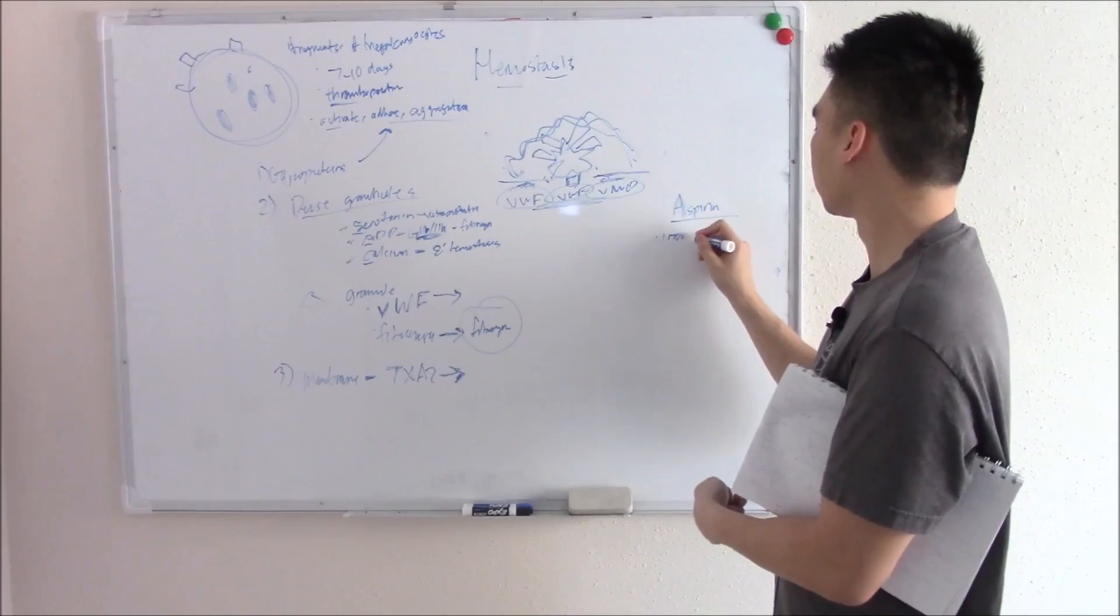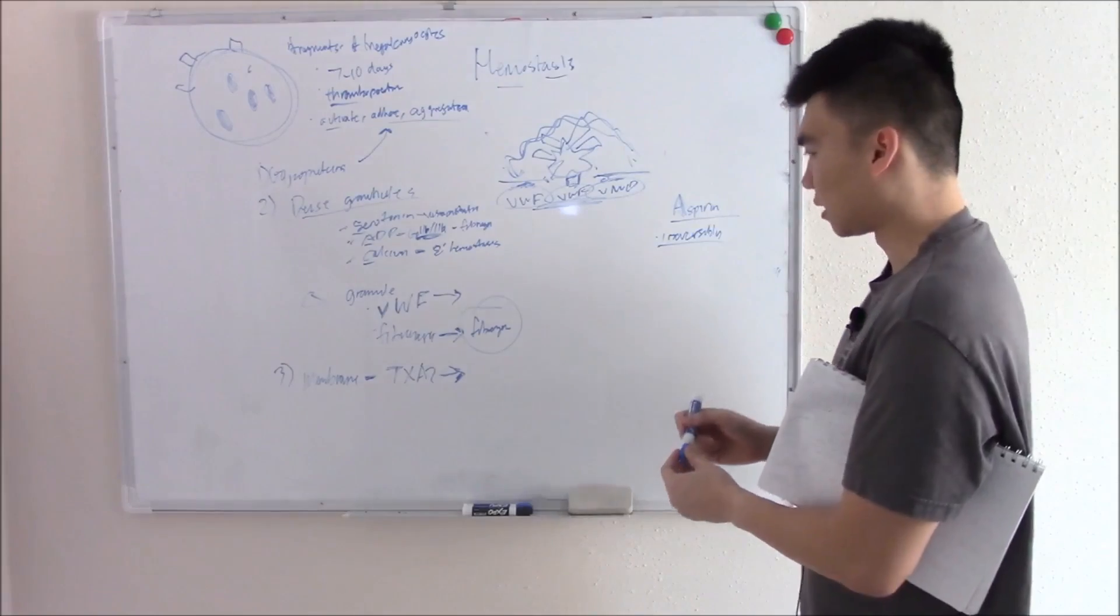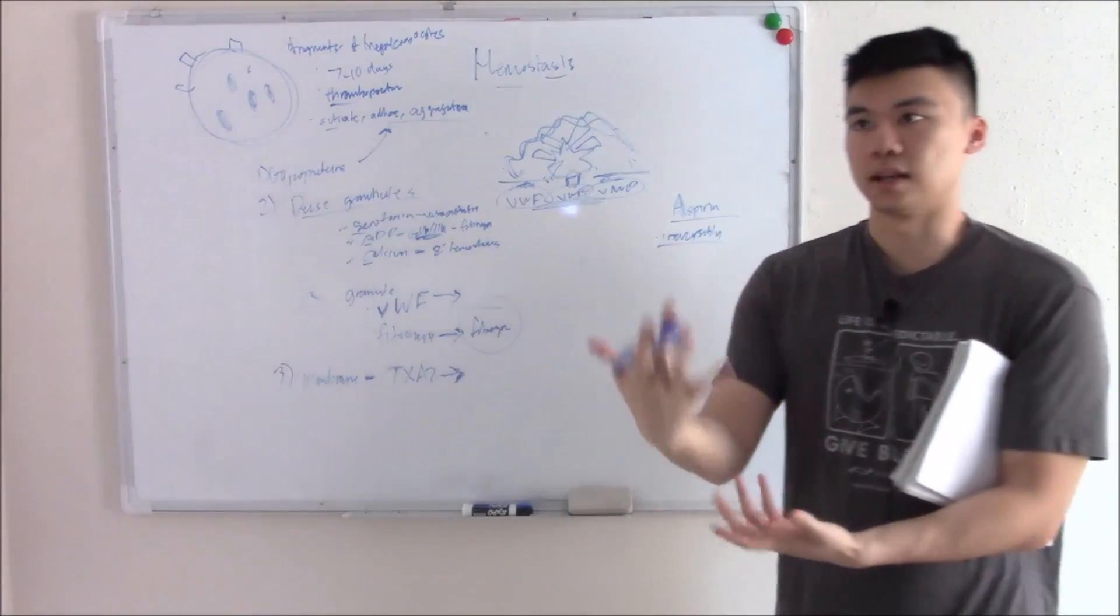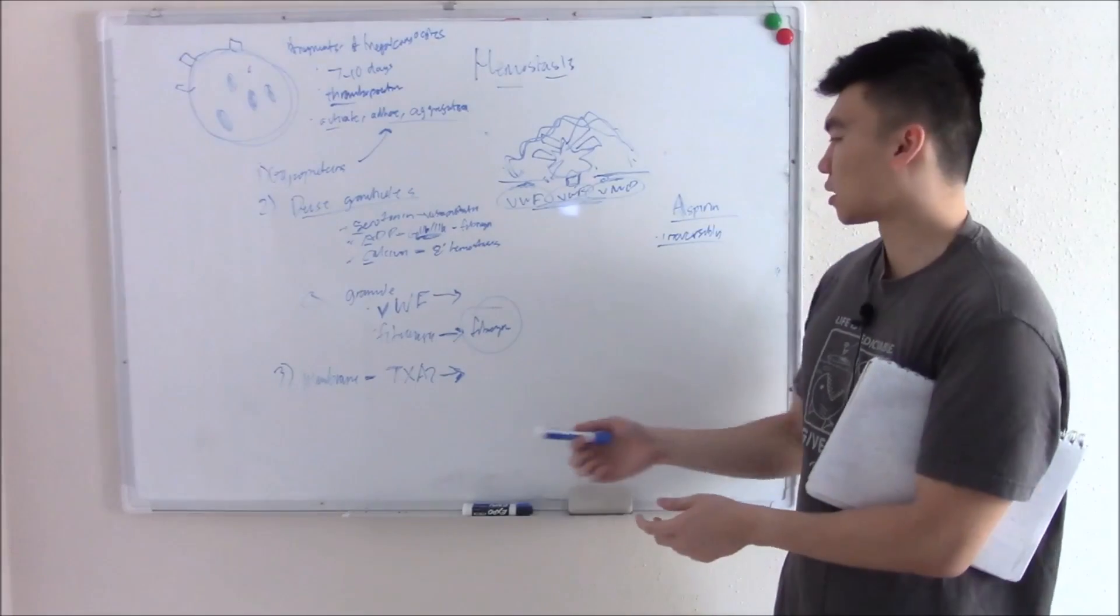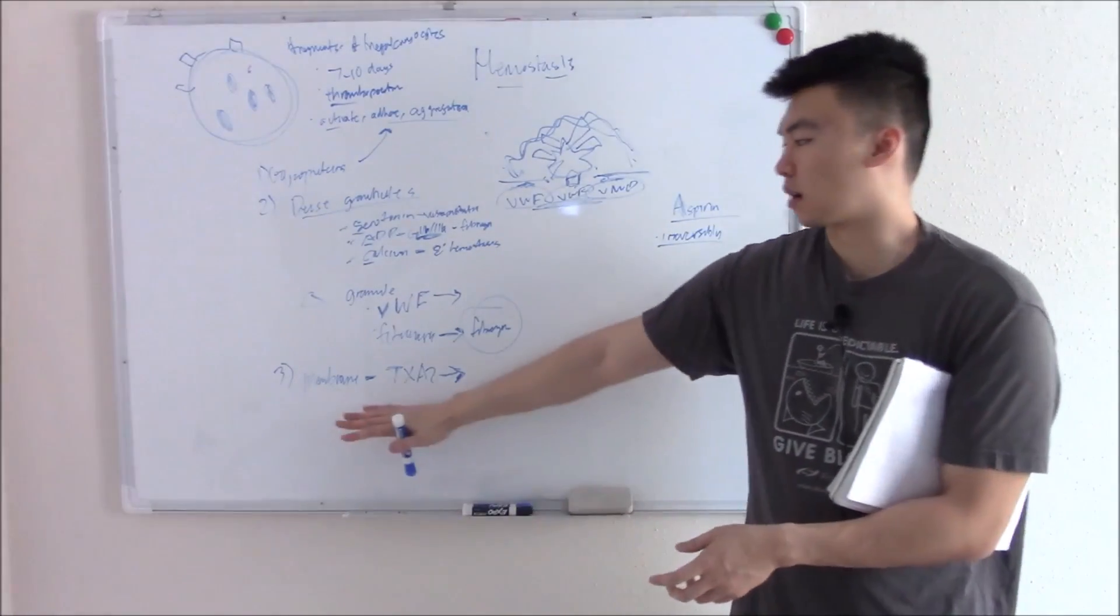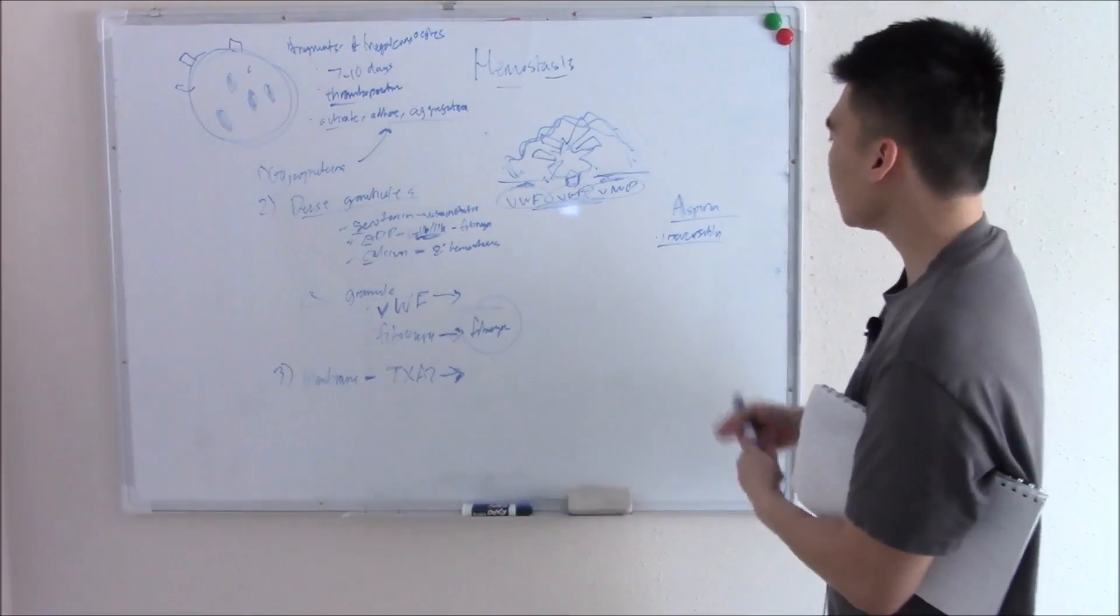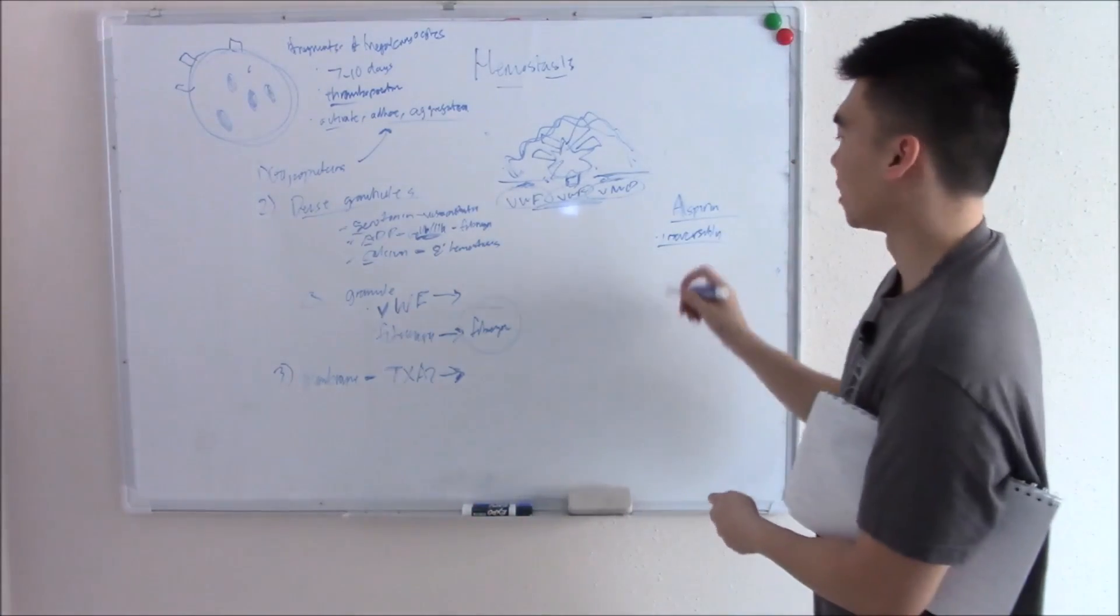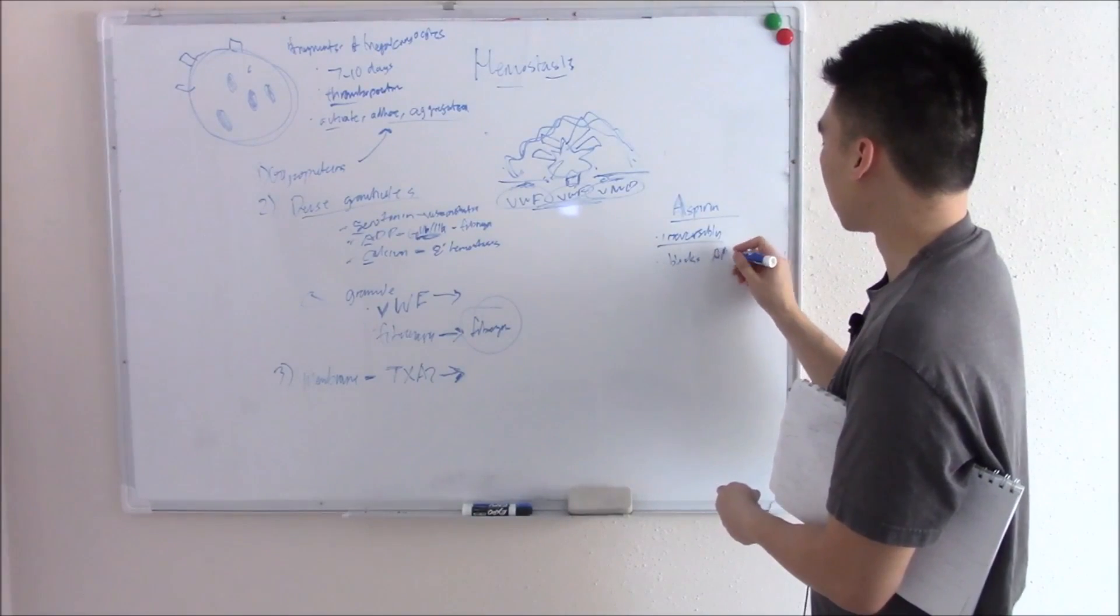Because it blocks the arachidonic pathway, you get the anti-inflammatory effects. You also get the anticoagulant effects because you're blocking the formation of thromboxane A2. That's how aspirin causes anticoagulation.